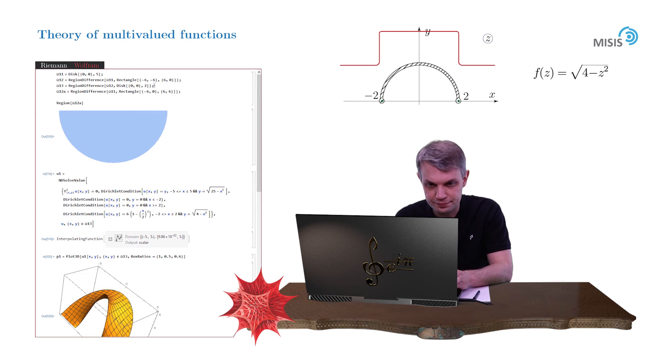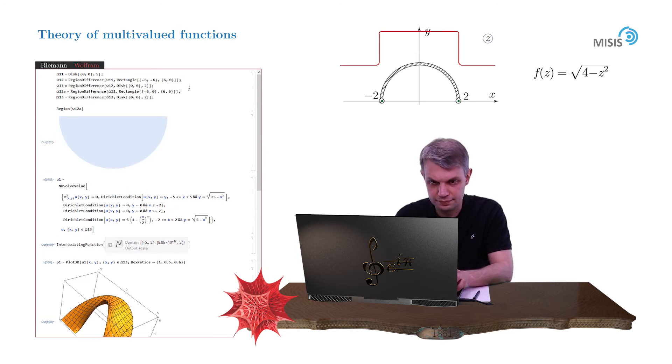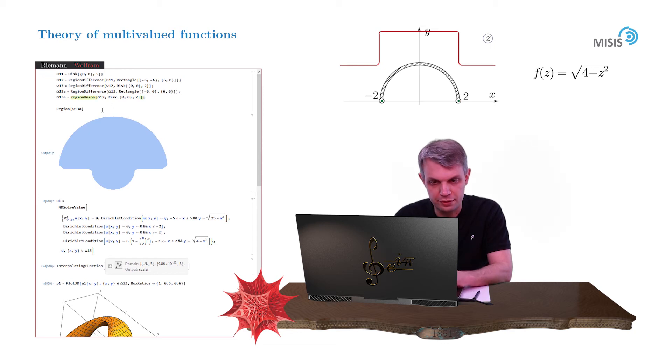Now we should actually add additional semi-circle stemming from the branch cut. So let's do this. Now we'll use region union. And let's see if it worked. Oops, sorry, I forgot a here. Yeah, perfect. Well, we see that it has some artifacts at the edges, but probably it would be okay when we solve the corresponding Laplace equations.